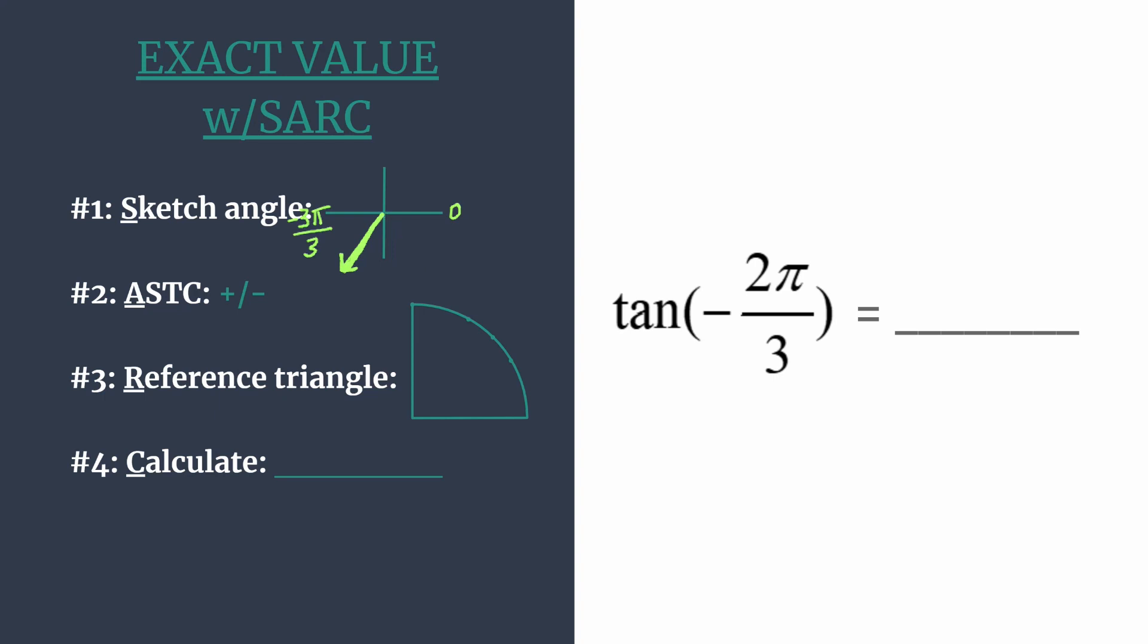Once we know where our angle's terminal side is located, we're ready for step 2. Think ASTC. You can remember that by thinking of the phrase 'all students take classes.' Start in quadrant 1 and label, working your way around in order: A, S, T, C.